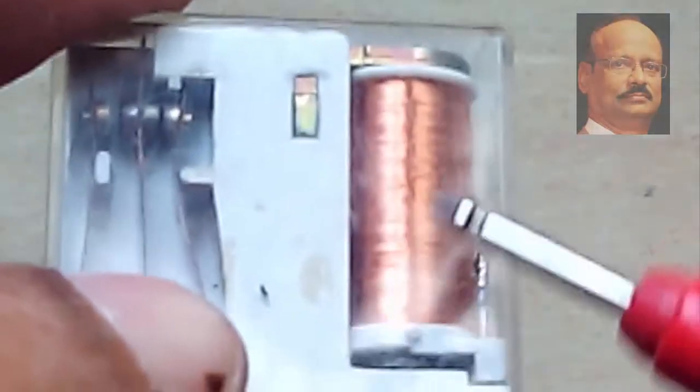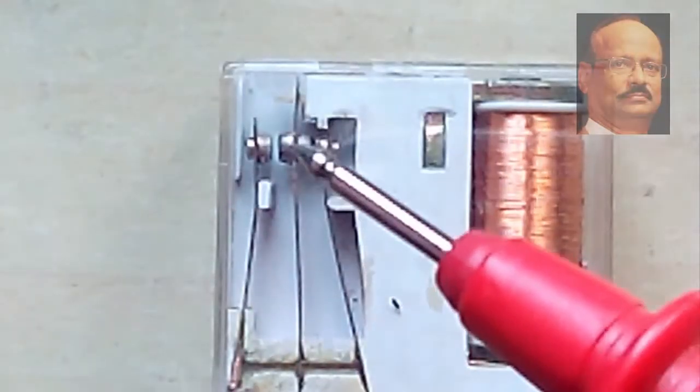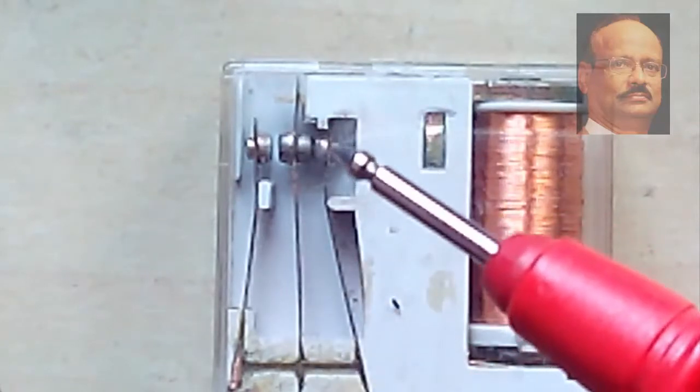And the contact points when you have to see, you see this is the coil that you can see, and these are the contact points which are visible here. That means this is the common point.